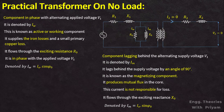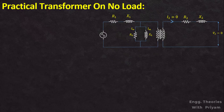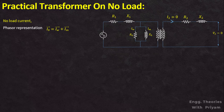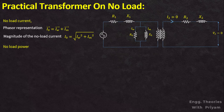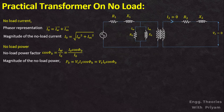Im is equal to I₀ sin φ₀. The phasor representation of no-load current gives I₀ = Iw + Im, and the magnitude of no-load current I₀ is equal to √(Iw² + Im²). To calculate the no-load power, we require the no-load power factor cos φ₀, which can be determined as Iw / I₀ = (I₀ cos φ₀) / I₀. The magnitude of no-load power P₀ is equal to V1·I1·cos φ₀, or V1·I₀·cos φ₀.